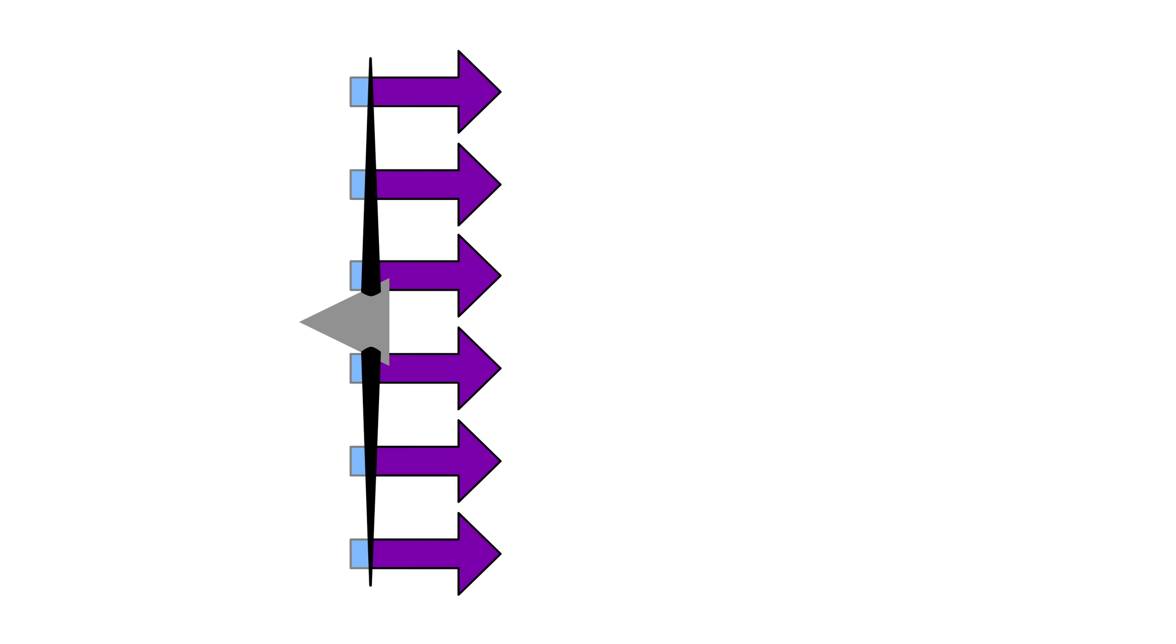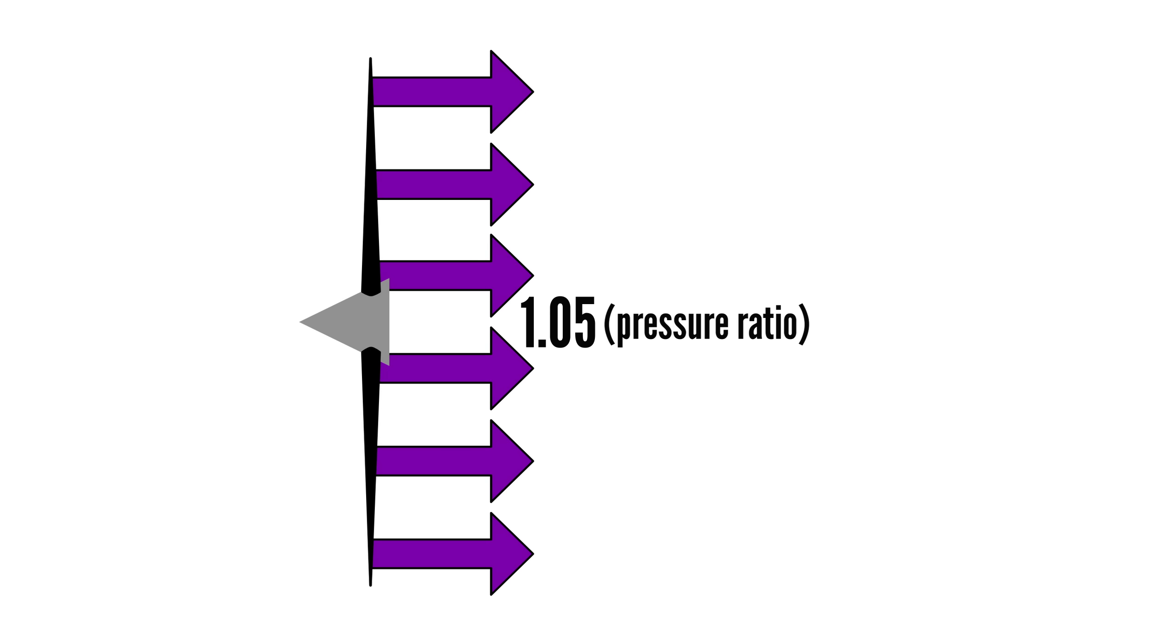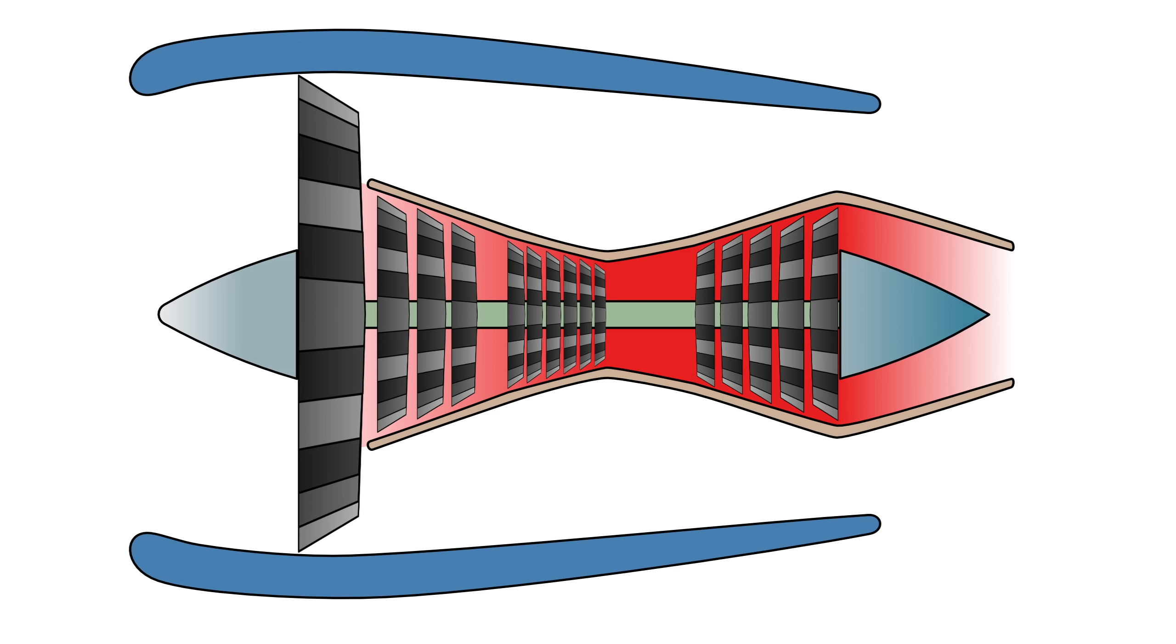Propellers usually generate a total pressure ratio of around 1.05, only about a 5% increase. Fans, especially in high bypass turbofans, reach pressure ratios between 1.4 and 1.7, so up to 70% higher than ambient. This pressure ratio is relatively low compared to the pressure increase in the compressor stages of the engine, but that's beyond the scope of this video.